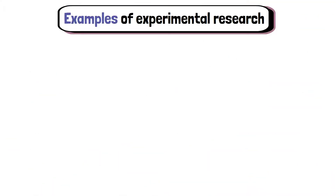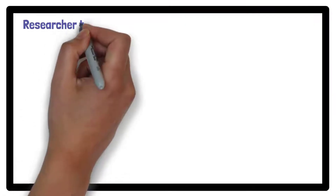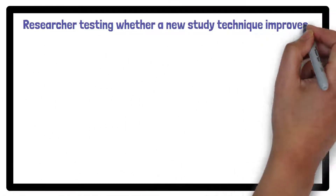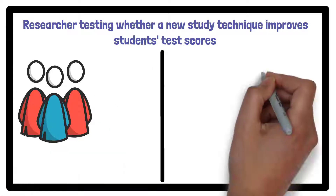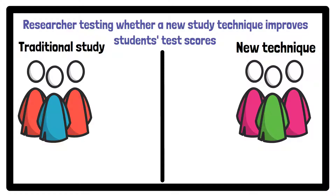Now let's look at some examples of experimental research. Imagine a researcher testing whether a new study technique improves students' test scores. The researcher could divide students into two groups — one group uses the new technique while the other uses traditional study methods.